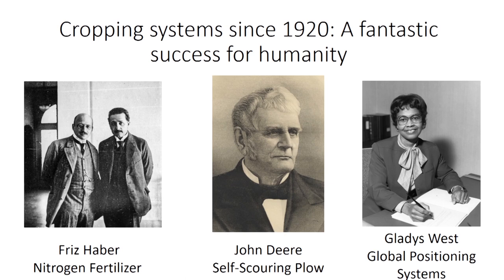On the left you have Fritz Haber, a German scientist who won the Nobel Prize for inventing nitrogen fertilizer. There's also a photo of Albert Einstein — before he became famous, Einstein was a patent officer investigating patents, and he and Fritz Haber knew each other for that reason. You also have scientific innovation from farmers like John Deere, who was a blacksmith and developed a self-scouring plow. In the US Midwest, plows were getting stuck in the mud, and John Deere invented a plow where the mud wouldn't stick as easily.